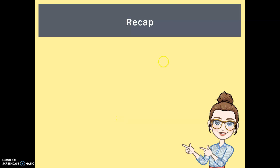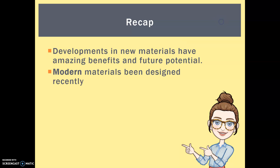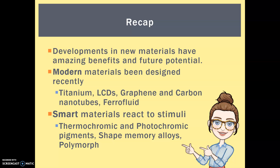So let's go through our recap for today. There have been amazing developments in new materials with benefits and a lot of future potential. Modern materials have been designed fairly recently — we looked at titanium, liquid crystal displays, graphene, carbon nanotubes, and ferrofluid. Smart materials are also modern materials but they react to stimuli, and we looked at thermochromic pigments, photochromic pigments, shape memory alloys, and polymorph. I hope you enjoyed that one — catch you next time, bye!